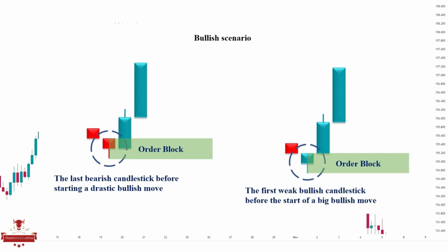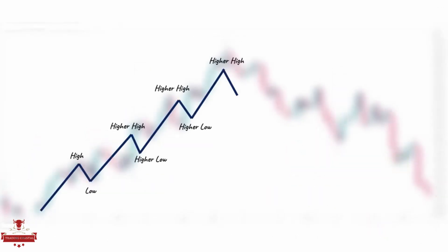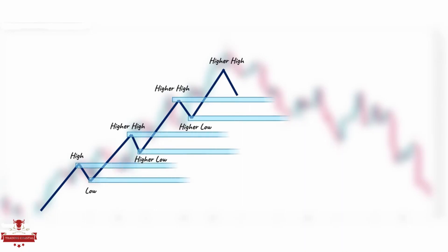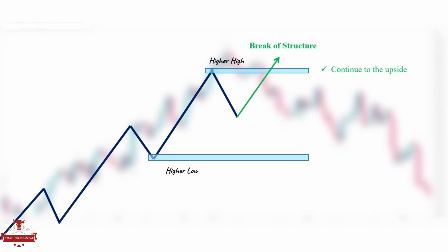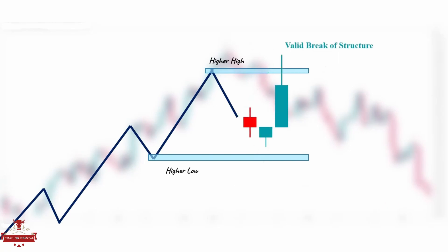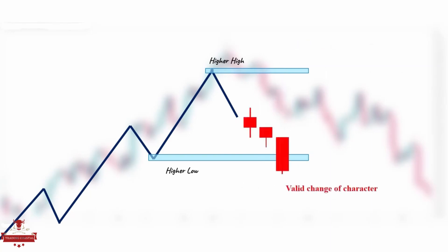Now let's discuss the concepts of break of structure and change of character. Imagine a trending market with a series of higher highs and higher lows. Each of the highs and lows are market structure levels, and the most recent higher high and higher low are the ones we monitor. Breaking the latest higher high to the upside indicates that the market intends to continue upside — this is a break of structure. The key point is that a break of structure is valid even if a shadow breaks above the previous structure level. But for a change of character, we certainly need a candlestick to break and close below the previous market structure.